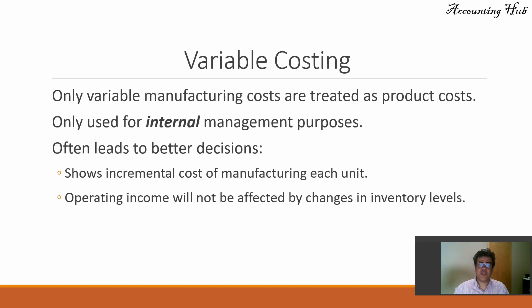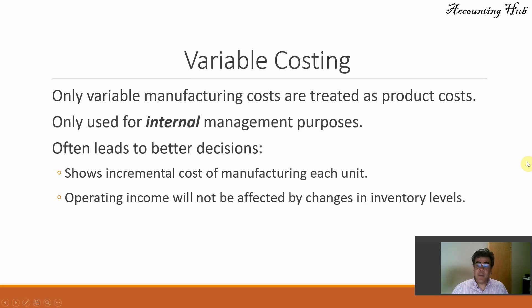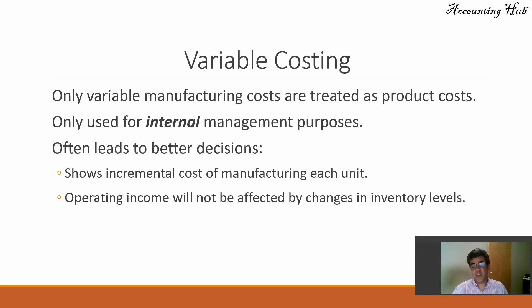What is the difference between absorption costing and variable costing? In variable costing, only variable manufacturing costs are treated as product costs. We don't use the old classification of product and period costs. Instead, we classify costs as variable and fixed — usually called variable expenses. Variable costing is only used for internal management purposes and often leads to better decisions.